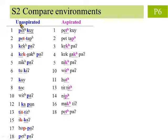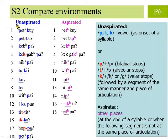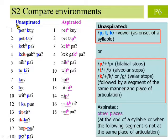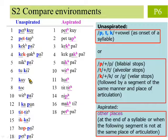Step 2. We compare the environments in the unaspirated group on the left and the aspirated group on the right, for the three phonemes P, T, and K. After checking, we observe that there are two situations in which the three sounds are unaspirated. First, when the sound occurs as the onset of a syllable. Second, when the sound is followed by a consonant of the same manner and place of articulation — for example, when both sounds are bilabial stops, or both alveolar stops, or both velar stops. In all other cases, the sounds are aspirated. So this is the answer for the question.